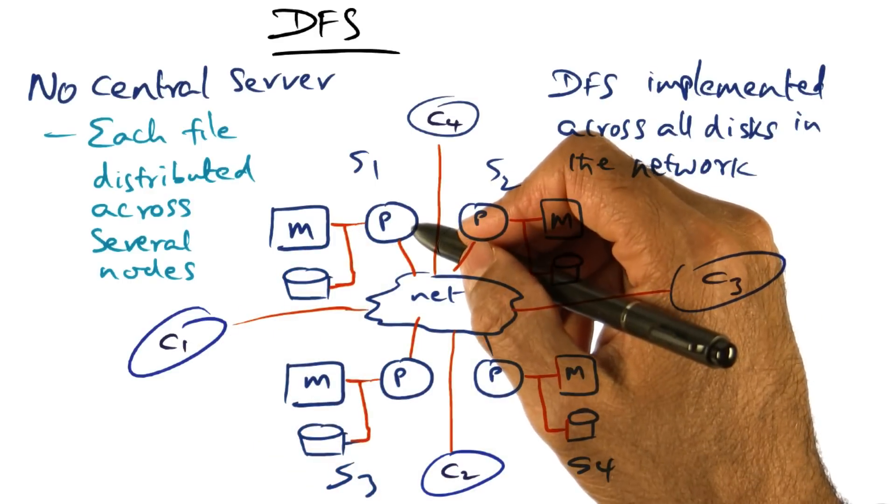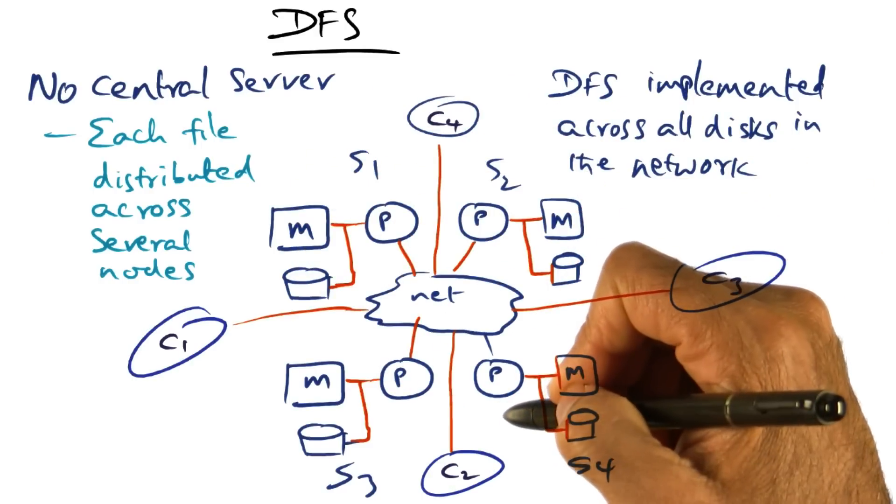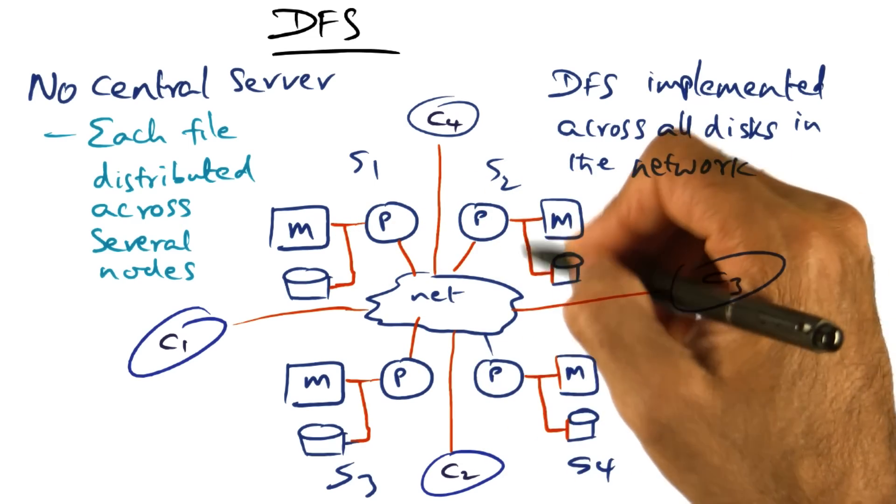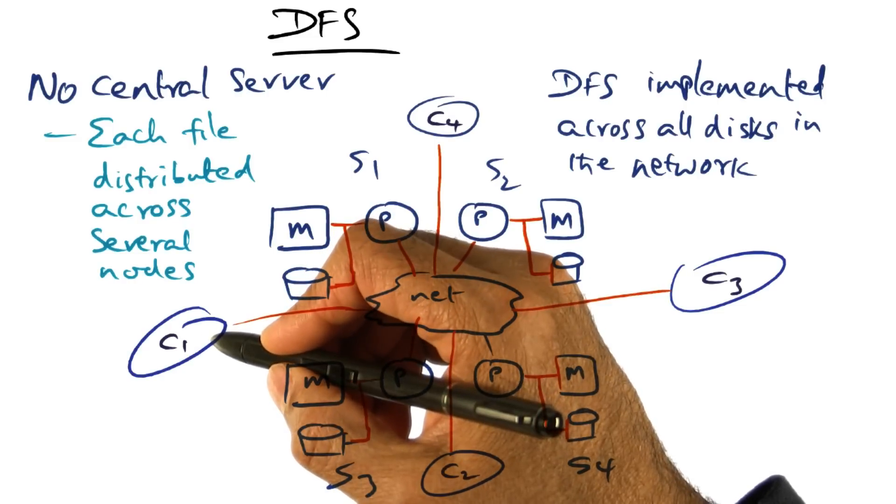Since each file is distributed across all of these different servers, the IO bandwidth available cumulatively across all servers can be used to serve the needs of every individual client.